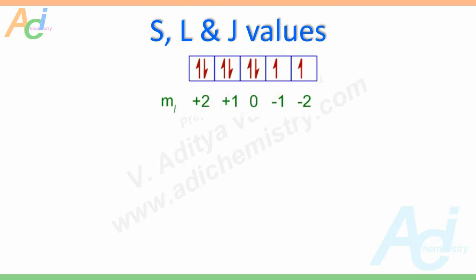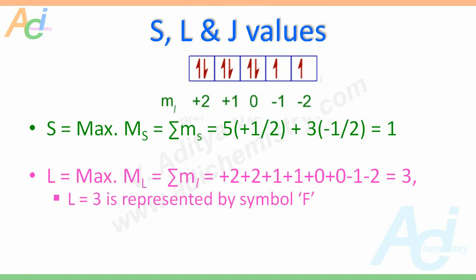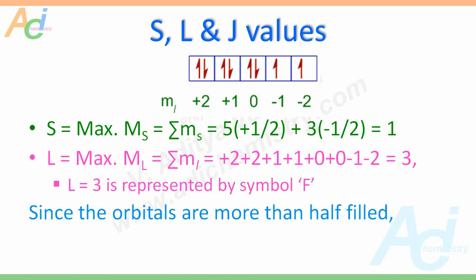Let us find the S, L, and J values for this configuration. Since there are 5 electrons with +½ spin and 3 electrons with −½ spin, the S value equals 1. For the L value, we sum up the ml values of all electrons, which equals 3. L equals 3 is represented by the symbol F. Since the orbitals are more than half-filled, J equals L plus S, that is 3 plus 1, which equals 4.